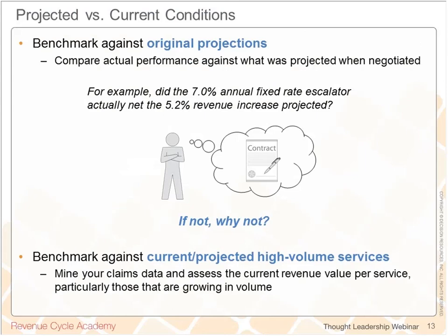First, benchmark that contract against its original projections. Chances are, no matter who negotiated it — you or others, maybe members of your staff — that contract was modeled as having a certain worth, a certain revenue value to your organization. Each change of the rate last time was projected to yield a certain reimbursement. The question is, did it actually yield that? If it didn't, why didn't it? What surprises you in here?